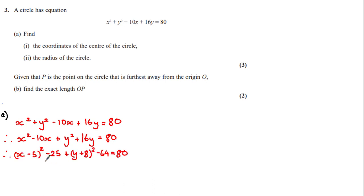Completing the square of the x terms, we get x minus 5 all squared minus 25. We get the minus 5 by halving the coefficient of x, and then we need to subtract by the square of this term to get minus 25.